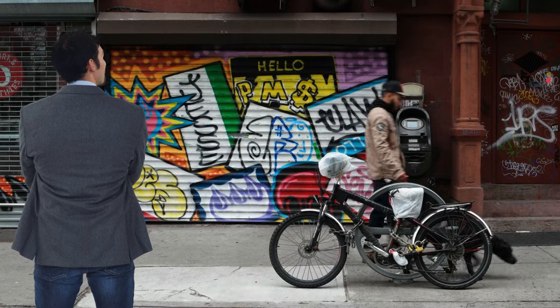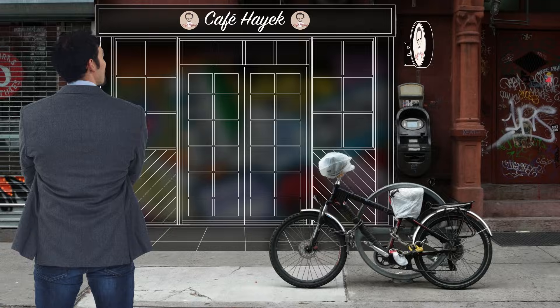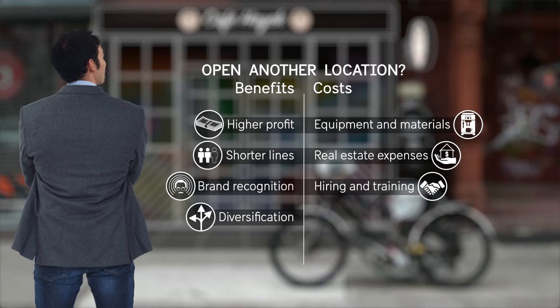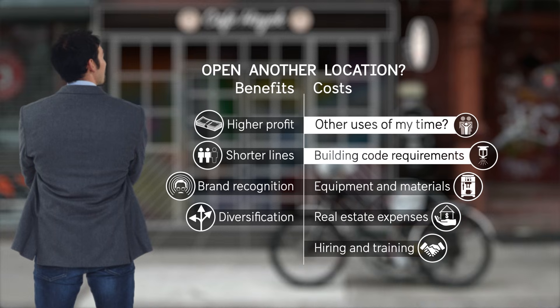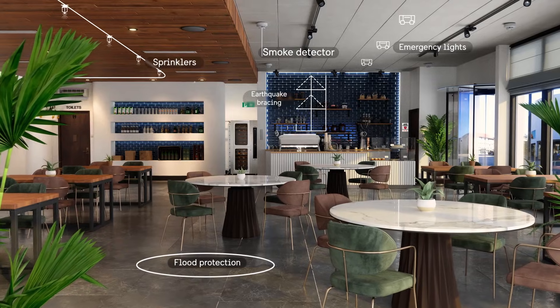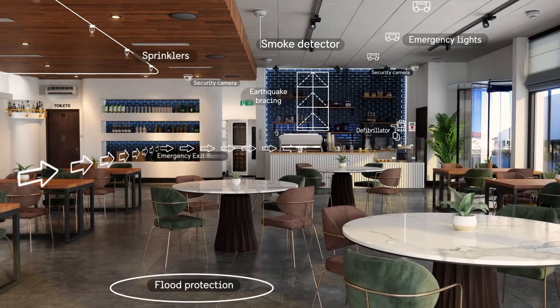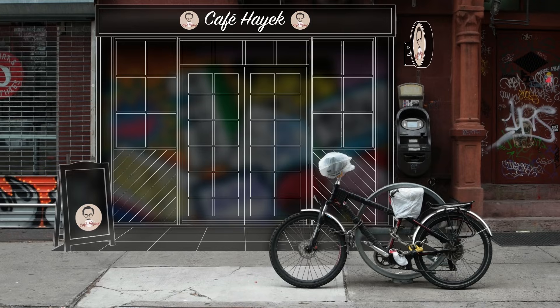The line is out the door here. Perhaps the owner has considered opening a second location. As the building code becomes more stringent, the cost of opening an additional location goes up. It's not just the direct monetary costs of paying for things like sprinklers — it's also the opportunity costs of the extra time and effort to file permits, manage the work, and schedule inspections. A more stringent building code means a higher cost for opening up new businesses, and in turn, that higher cost can mean that fewer new businesses get open.